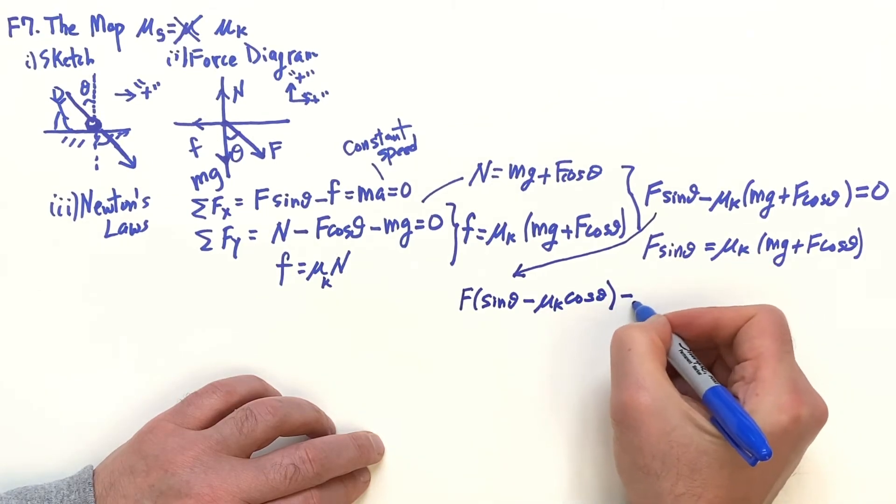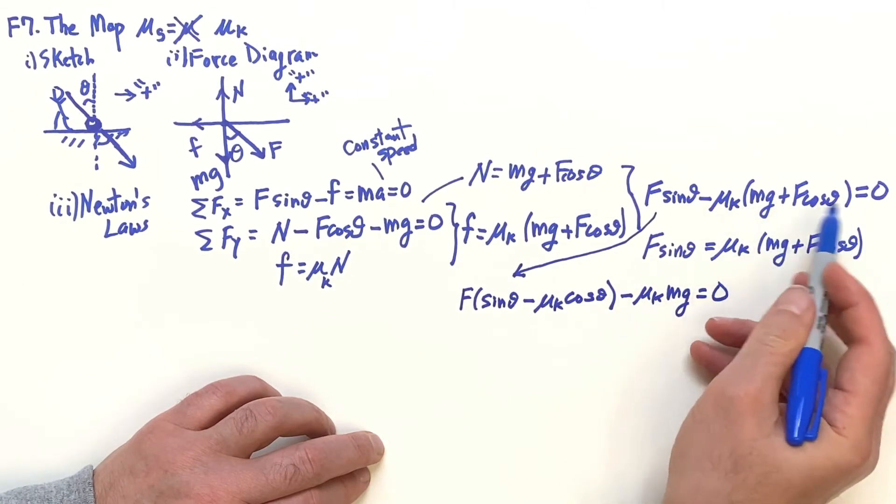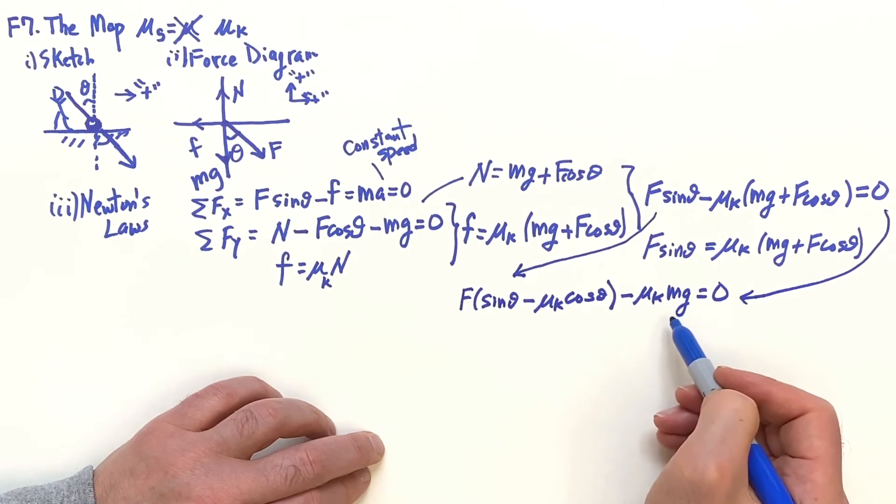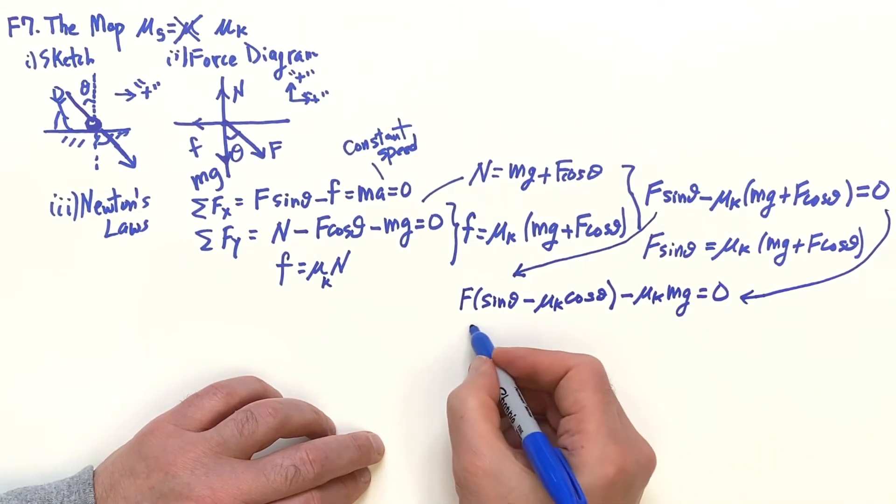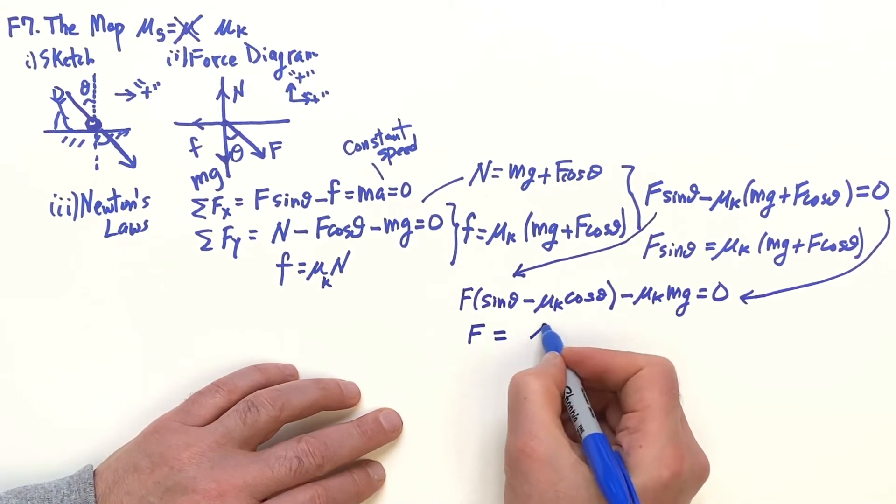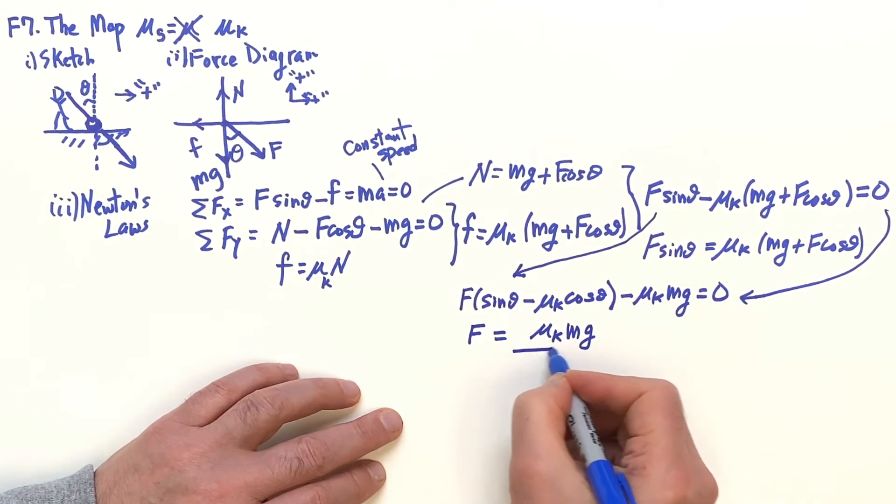And then minus μ_k mg equals zero. So I prefer now to work with this top equation to get this. Then I can see that I can bring the μ_k mg to the right side and then divide by this and I'm finished.